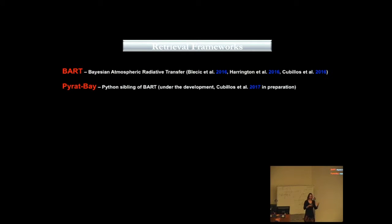To explain how this works, I'm going to talk about the retrieval frameworks that I developed with some of my collaborators. I also mentioned Bayesian atmospheric radiative transfer code, BART, last time. This is a retrieval framework, open source, that anybody can use, and it's been out there for the last year. It has full documentation.